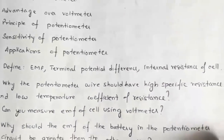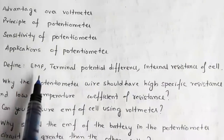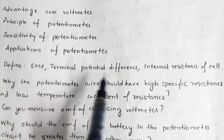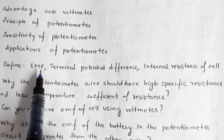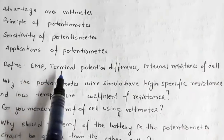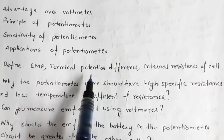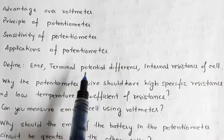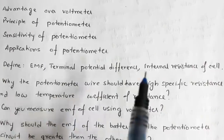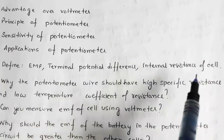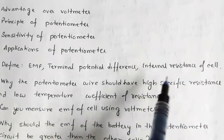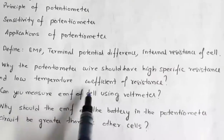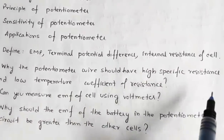You may be asked standard definitions: EMF is the potential difference across the two terminals of a cell in an open circuit. Terminal potential difference is the potential difference across the two terminals of a cell in a closed circuit. Internal resistance is the resistance offered by the electrolyte of the cell to the passage of electric current.